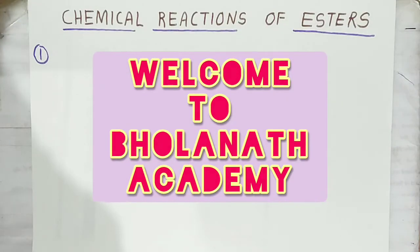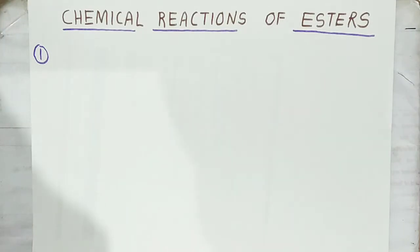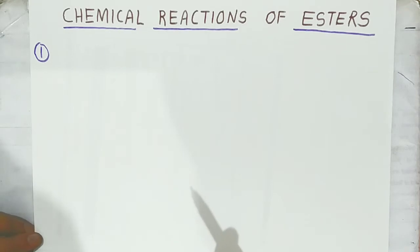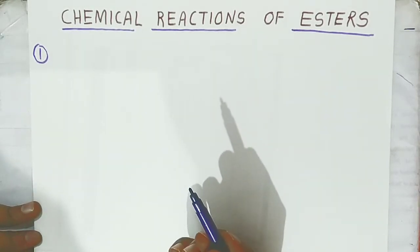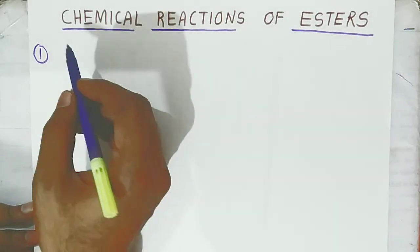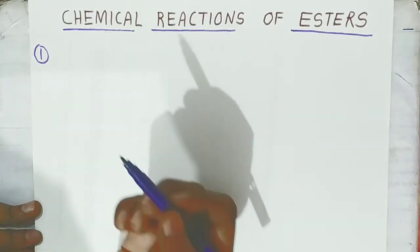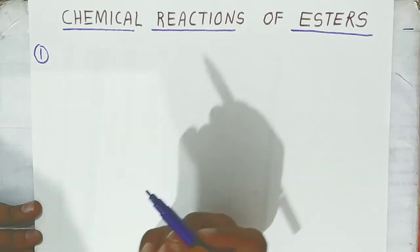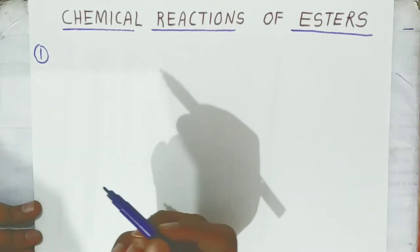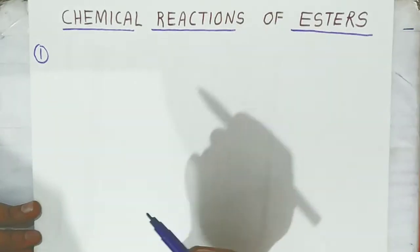Hello students, welcome to Bholanath Academy. Today we are going to see the chemical reactions of esters. Here we are using a very simple ester called ethyl acetate. Now, we will see how ethyl acetate is going to react with different compounds.